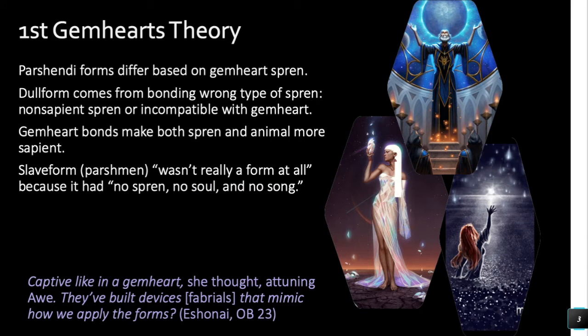Eshonai describes slave form and differentiates it from dull form. Dull form is a form Parshendi can take on; slave form is only Parshmen. She says slave form wasn't really a form at all because it has no spren, no soul, and no song. I believe the soul of any Rosharan native with a Gemheart resides inside their Gemheart along with their spren. The slave form has no soul, no spren, and cannot hear the rhythms — presumably because no song.